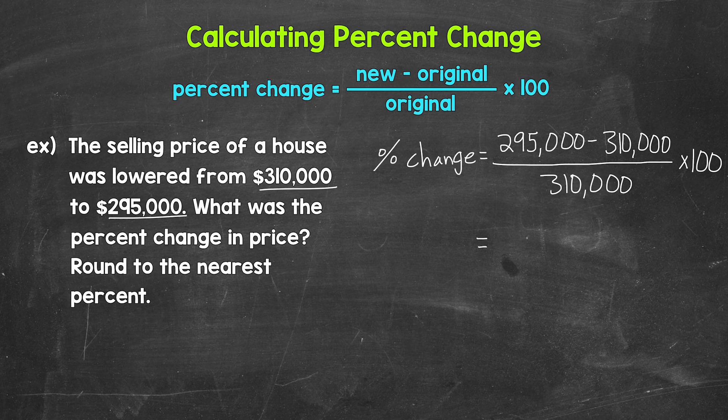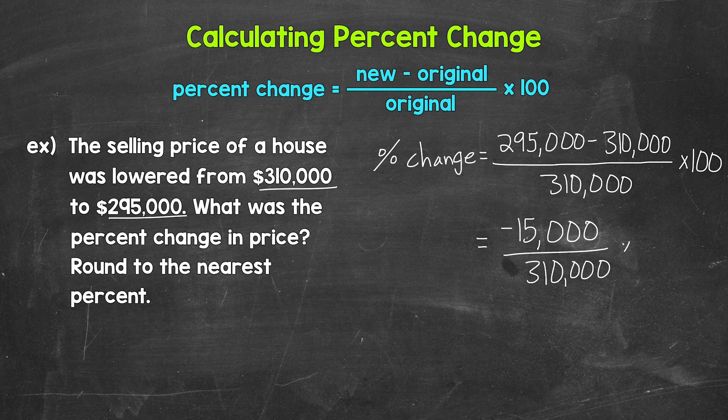So let's subtract. We have $295,000 minus $310,000. That gives us negative $15,000. That's the amount of change. And since it's negative, that tells us we had a decrease. The house decreased in value by $15,000 and we need to divide that by the original value and then multiply by 100.